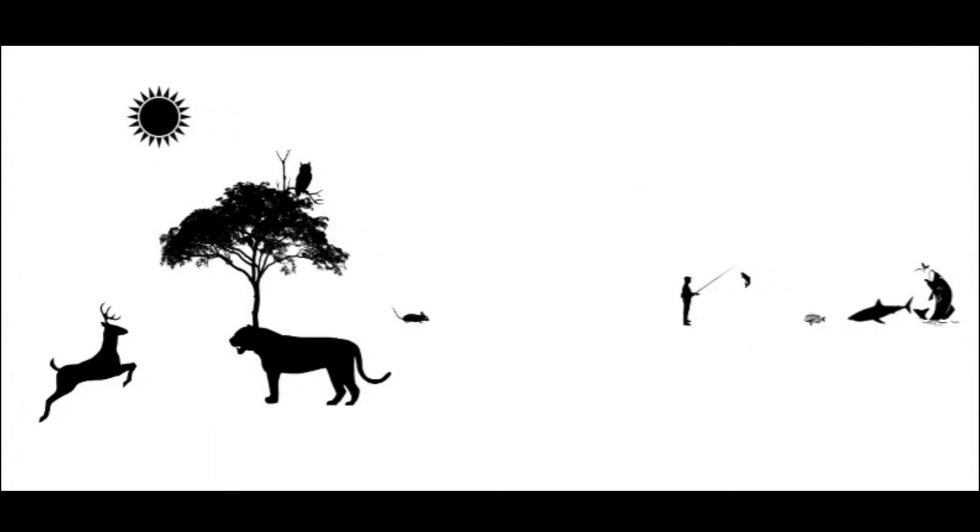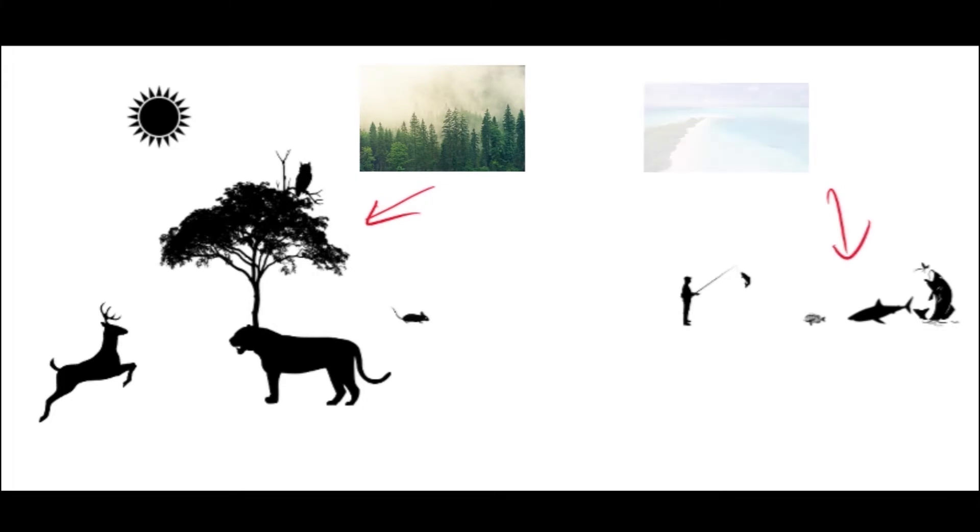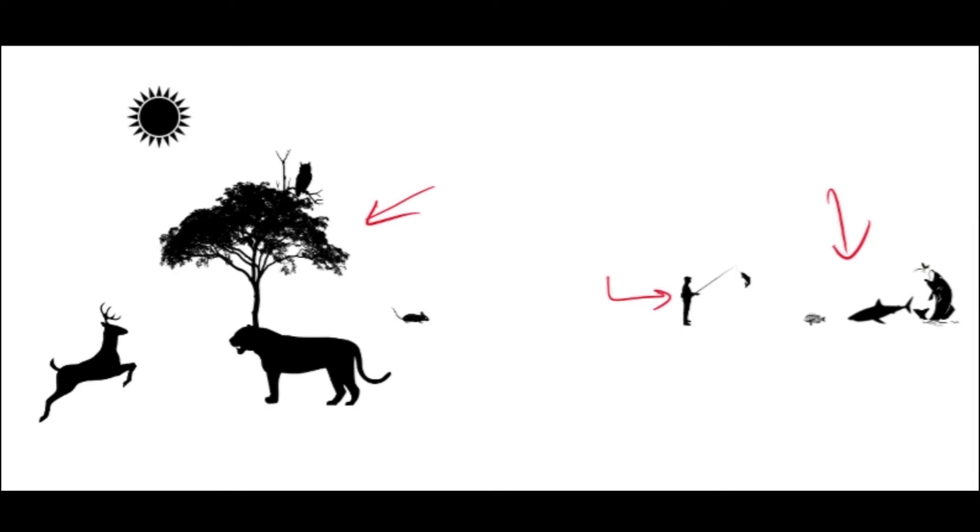Now ecosystems can be anywhere: forests, rivers, oceans, ponds, or even small puddles, and even inside a human body. That's because millions of microorganisms live inside a human body.